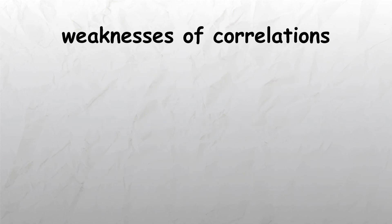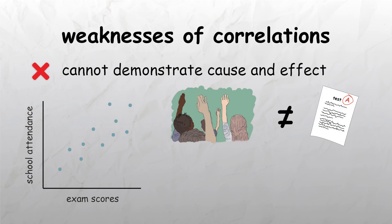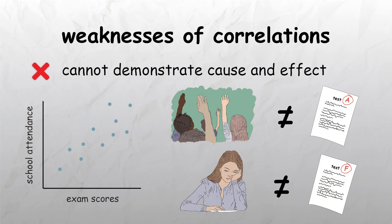However, it is important to remember that a correlational analysis cannot demonstrate a cause and effect relationship between variables. For example, if we found a positive correlation between exam scores and attendance rates at school, we can't conclude that high attendance causes high achievement, or that low attendance leads to low achievement. It is possible that low achievement is leading to low attendance, or that another variable, for example illness, is causing both low achievement and low attendance at school.